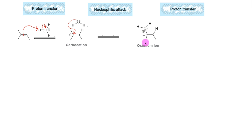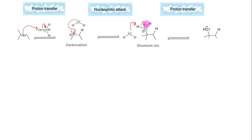This positively charged oxonium ion must lose a proton to form a neutral alcohol. This is done by a base — water in this case — which deprotonates the oxonium ion to form a neutral alcohol and a hydronium ion. Notice that the hydronium ion was used in the first step and has been regenerated in the third step; therefore this reaction is called acid-catalyzed hydration of alkenes.